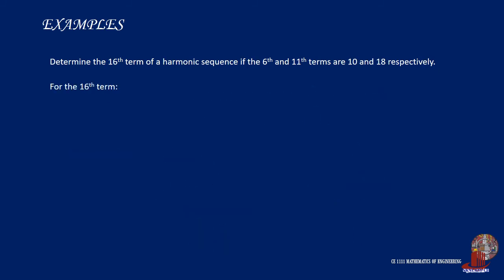With a similar formula, we can then solve for the sixteenth term by plugging the values for a and d as previously solved, giving the value 1 over 90, then taking the reciprocal, we arrive at 90 for the answer.